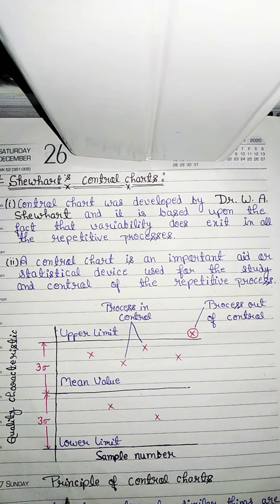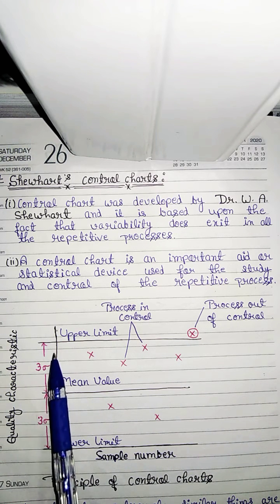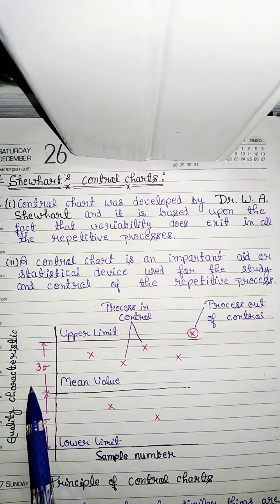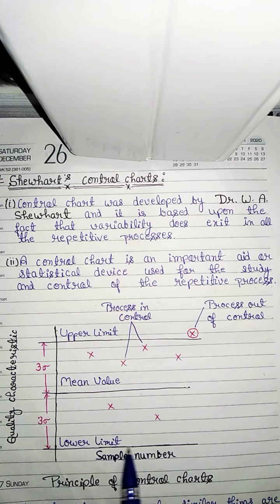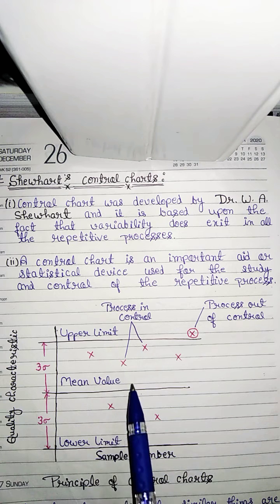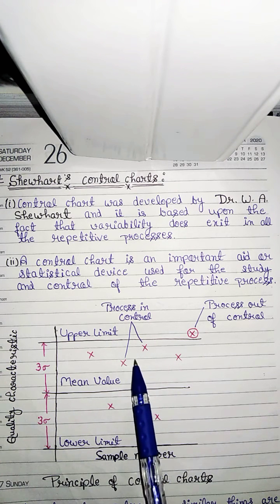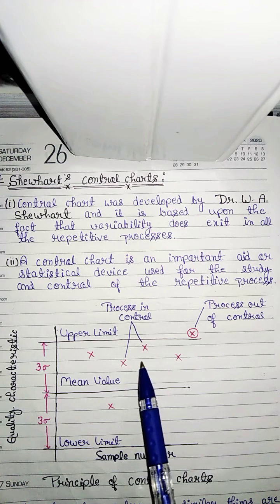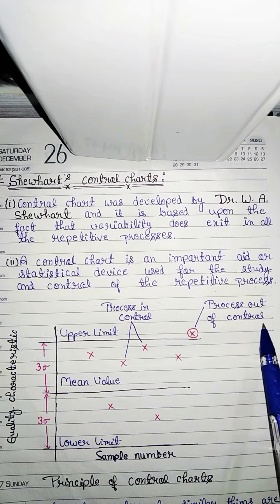This figure shows the principle of control chart. Here x-axis represents sample number and y-axis represents quality characteristic. It shows the lower limit, mean value, and upper limit. Between lower limit and mean value, the process is in control. At upper limit, process is out of control.